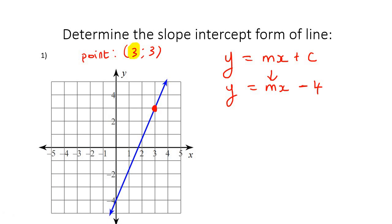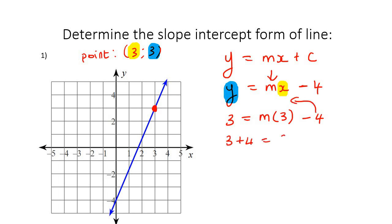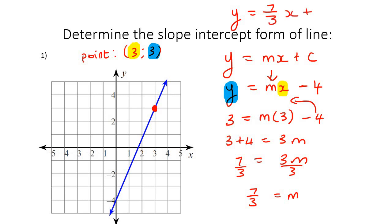So we put the x value in and the y value in, giving us: 3 equals m times 3 minus 4. So 3 plus 4 equals 3m, meaning 7 equals 3m. Dividing both sides by 3, m equals 7 over 3. So our answer is y equals 7 over 3 x minus 4. That's a cool method — we didn't have to use the slope formula at all. You can decide what you're most comfortable with.